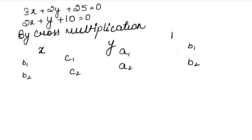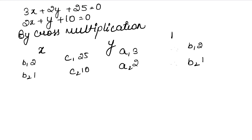What is B1, B2? The coefficient of y is B1, B2. The coefficient of x is A1, A2, and the constant term (without variable) is C1, C2. So B1 is 2, B2 is 1, C1 is 25, C2 is 10, A1 is 3, A2 is 2, and B1 is 2 and B2 is 1.